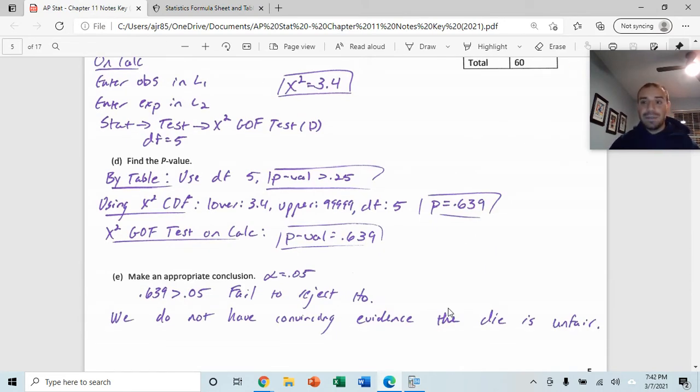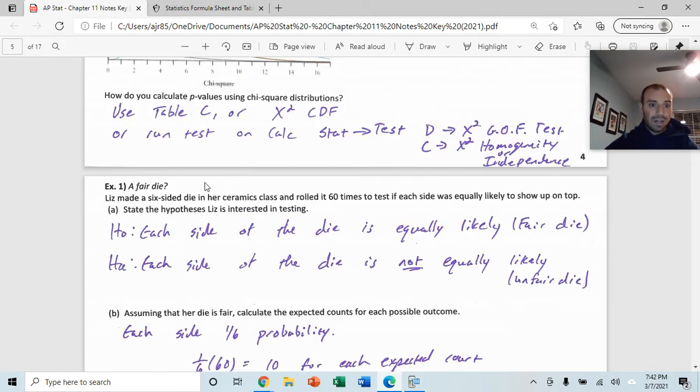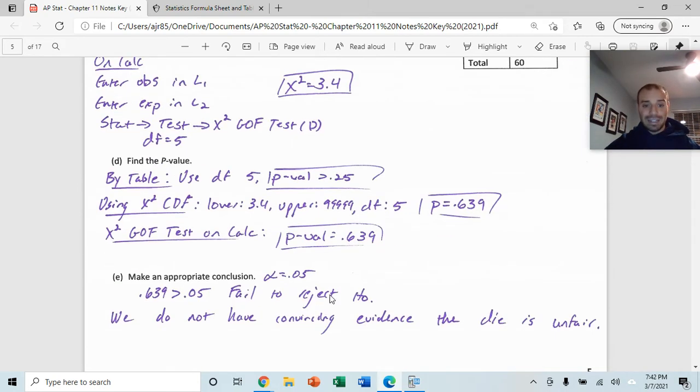Now, we're doing the same thing that we saw in all the other chapters here. We're comparing that p-value to a significance level of 0.05. In this case, our p-value is greater than the significance level. So, we would fail to reject the null hypothesis. We do not have evidence that each type of the die is not equally likely, or we do not have evidence that the die is unfair.